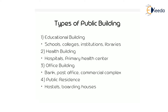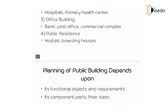The first type is the educational building, which is subdivided into schools, colleges, institutes, and libraries. The next is the health building, subdivided into hospitals and primary health centers. Third is office building, subdivided into bank, post office, and commercial complex. Fourth is public residence, subdivided into hostels and boarding schools.